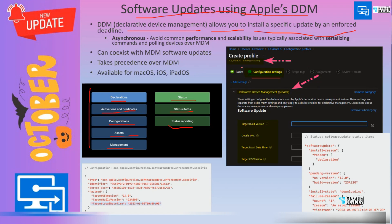If you look at the settings catalog software updates policy for Mac, you would be able to see more granular options. For example, you can target based on build version, provide a detailed URL to give more information to end users, provide a target local date and time, and a target OS version. This is more granular if you use the settings catalog option for targeting software updates.